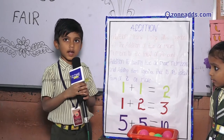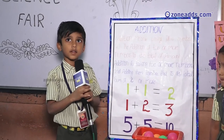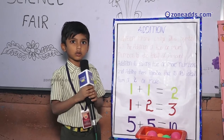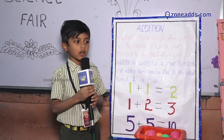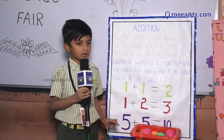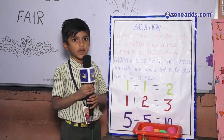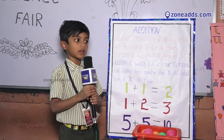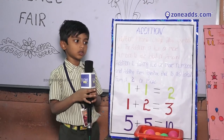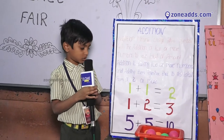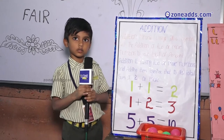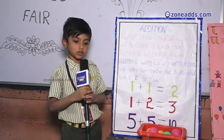That is its total sum of two or more numbers. One plus one plus one is equal to two. One plus two is equal to three. Five plus five is equal to ten. Thank you.